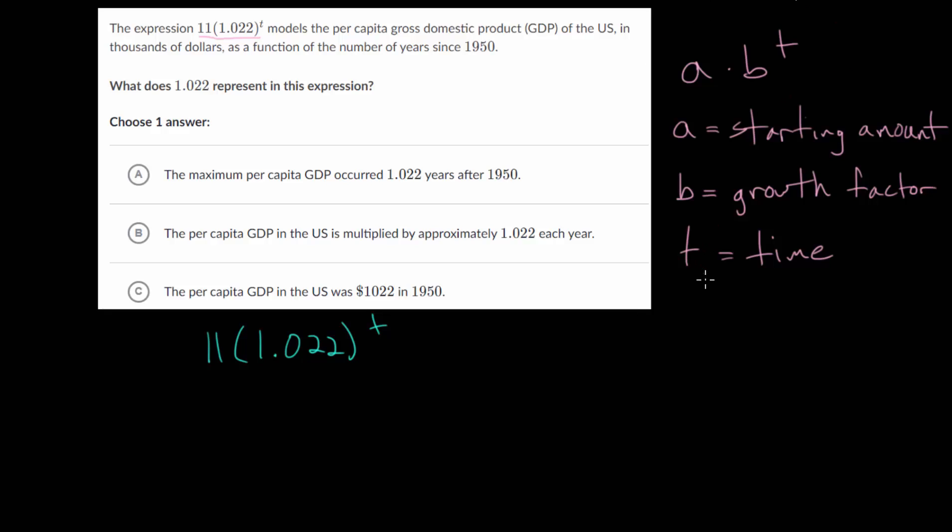Now we could just compare it to our general formula. The better you get at these, the more you're going to do that, since that's the faster way to approach these. But you also want to understand why this is the general formula. For us, we can see this 1.022, that's this value, that is our growth factor. That's b in this formula.